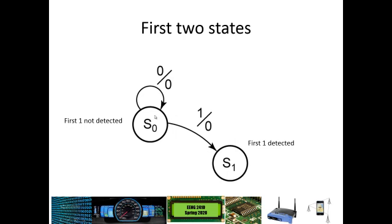S0 is our initial state. As long as we keep getting 0s, we keep cycling back to ourselves, outputting 0. When we get a 1 as the input, that transitions us to S1, but we still have an output of 0. If we are in S1 and we get a 1, we keep going back around to S1, because that 1 could still be the beginning of a 1, 0, 1 sequence.